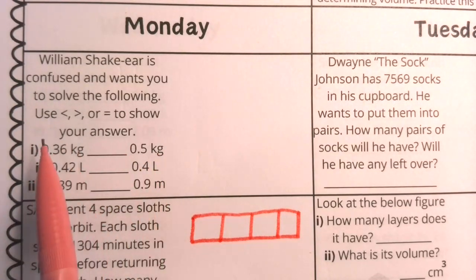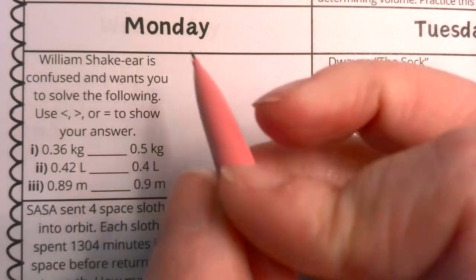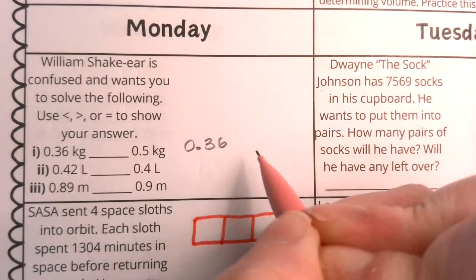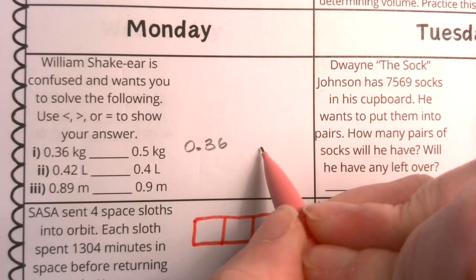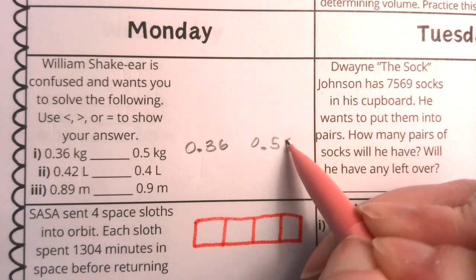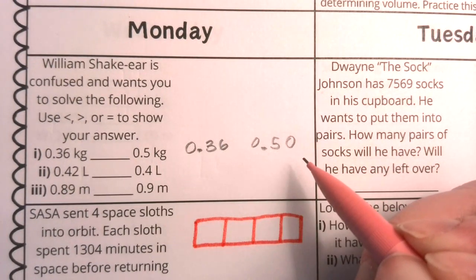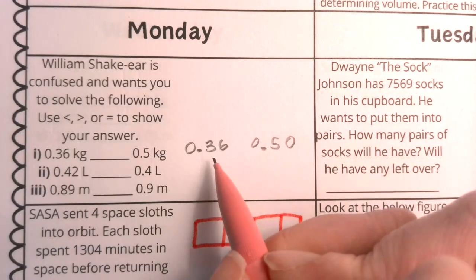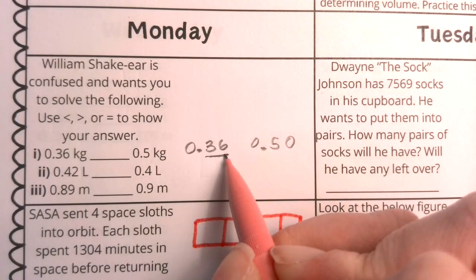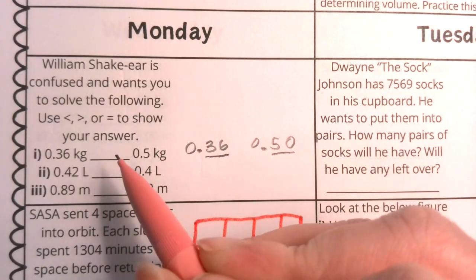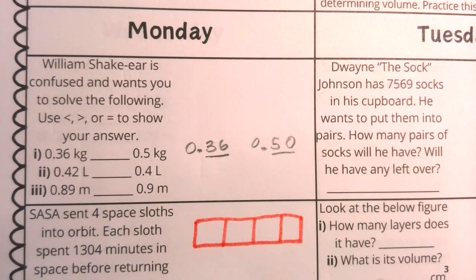First of all, boys and girls, let's remember that this number, 36 hundredths, when we're comparing it to this 5 tenths, do remember that you can add zeros to the end of a decimal, and it doesn't change the value. So really, we're thinking about 36 hundredths as compared to 50 hundredths. So don't let this fool you.